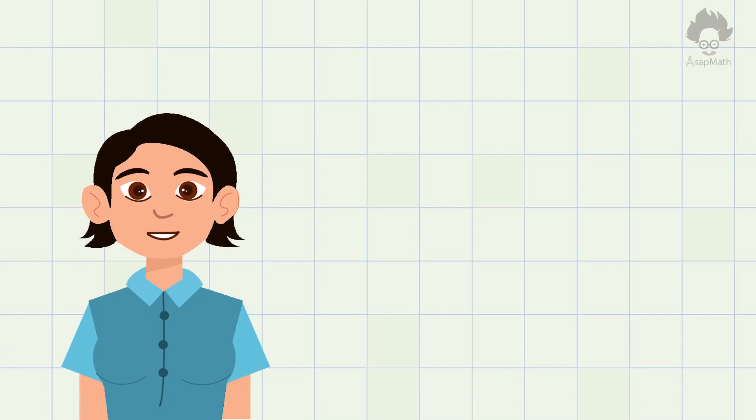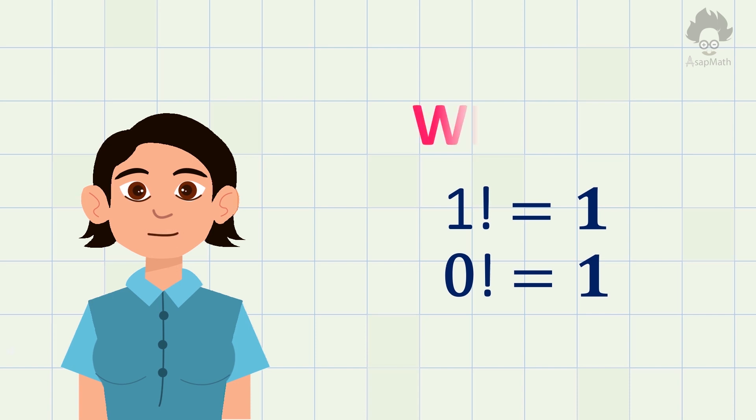Hi guys, we are back again with a proof video. In this video we are going to show you how both factorial 1 and factorial 0 is equal to 1.